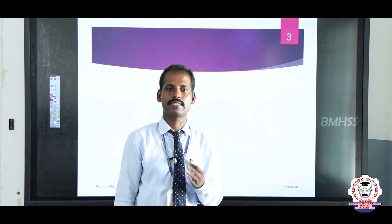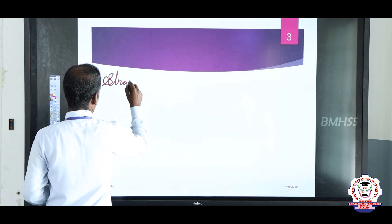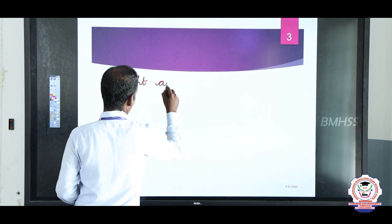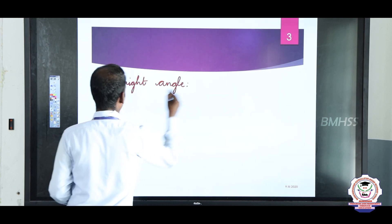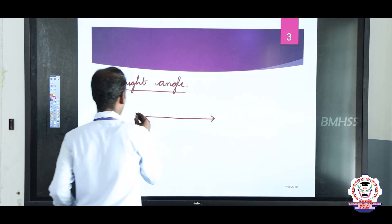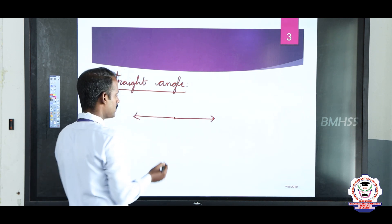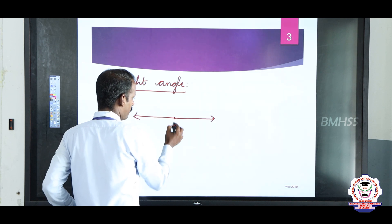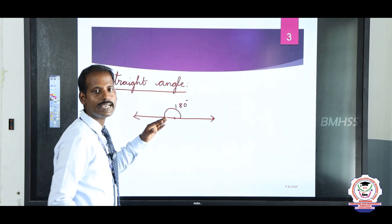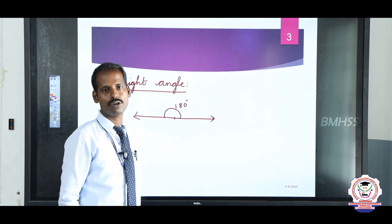Next one: straight angle. What is a straight angle? Here the line segment has a center point, with one ray on one side and another ray on the other side passing through. How many degrees? 180 degrees. Exactly 180 degrees is called a straight angle.